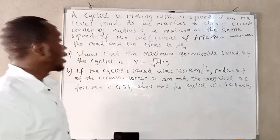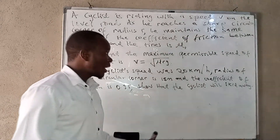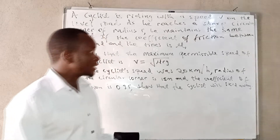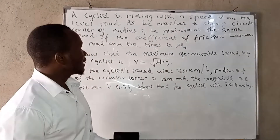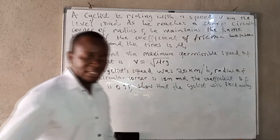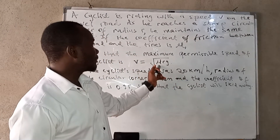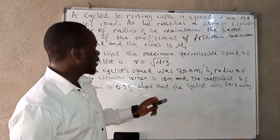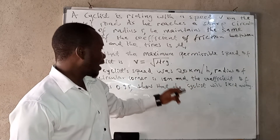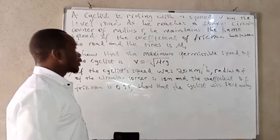So we have a scenario where there is a level road and a cyclist is coming, and as he comes there is a sharp circular corner. The question requires us to show that the maximum permissible speed as he negotiates that corner is given by that formula, and then to show whether he will skid away at the given speed.